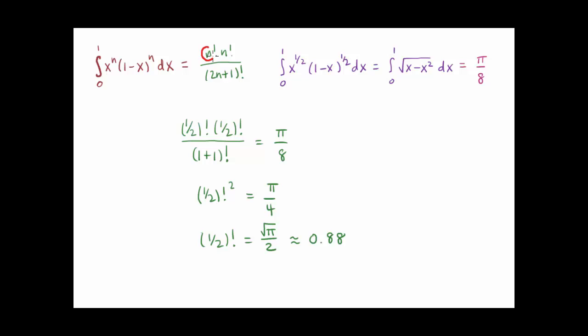So if I replace n in this formula with one-half, I get one-half factorial times itself over two times a half, which is one, plus one factorial, which is just two in the denominator. On the right, I can substitute pi over eight from our earlier work. If I multiply both sides by two, on the right I get pi over four, and on the left, one-half factorial squared, and then taking the square root of both sides, we conclude that one-half factorial could be the square root of pi over two, which is a number that's about .88.